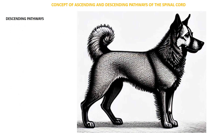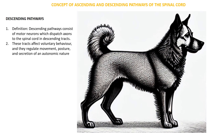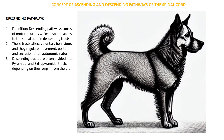Once information has been received through the ascending pathways and interpreted in the brain, feedback is sent back to the animal in order for it to react appropriately. This information travels through the descending pathways. By definition, descending pathways consist of motor neurons which dispatch axons to the spinal cord in the descending tracts. These tracts affect voluntary behavior and regulate movement, posture, and autonomic secretion. Descending tracts are often divided into pyramidal and extrapyramidal tracts depending on their origin from the brain.